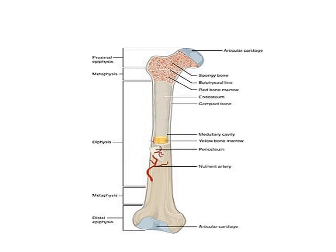The bony regions include: proximal epiphysis, metaphysis, diaphysis, metaphysis again, and distal epiphysis. Based on these regions, implants such as screws and plates are designed accordingly. The cancellous region is the loose, spongy area, the cortico-cancellous junction is intermediate, and the cortical bone (diaphysis) is the compact bone with less space.